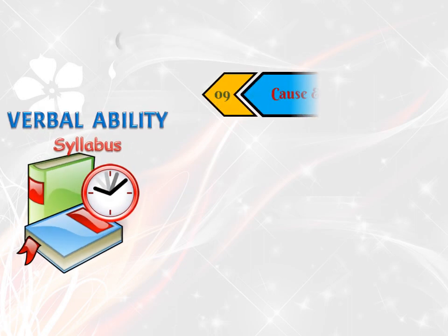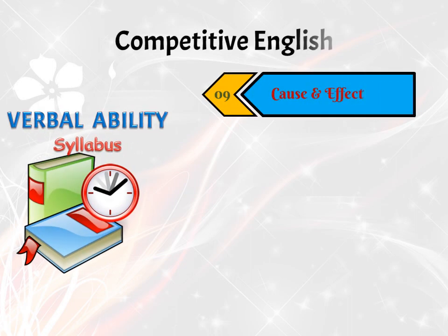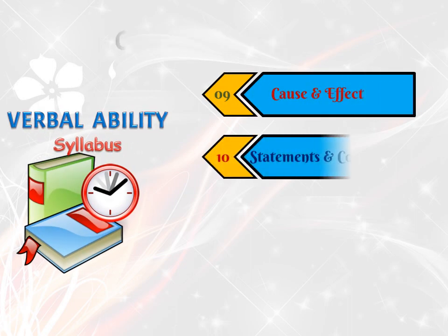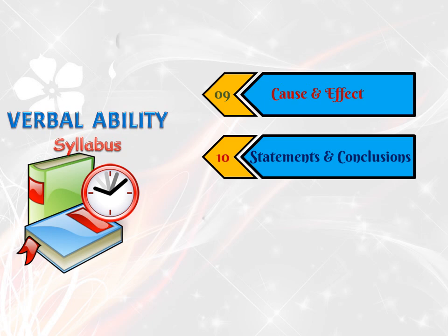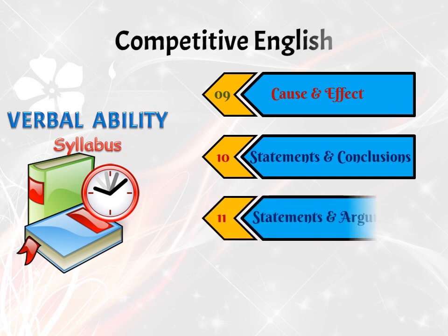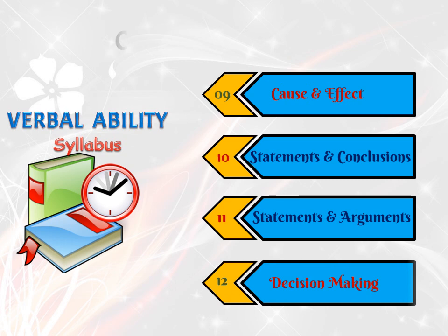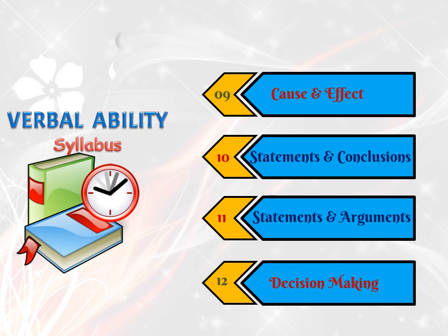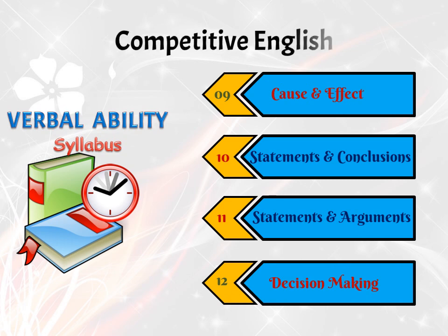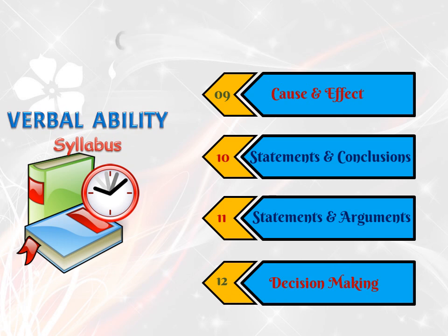The verbal ability syllabus further includes cause and effect, statements and conclusions, statements and arguments, and decision making. So this is the complete syllabus of competitive English.